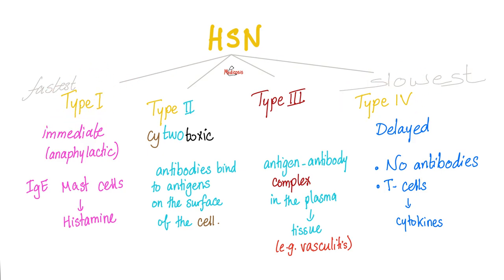Type 1 in a few words: immediate, anaphylactic, IgE, mast cells. They degranulate, releasing histamine, and histamine can give you the symptoms of anaphylactic shock.